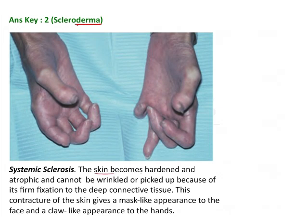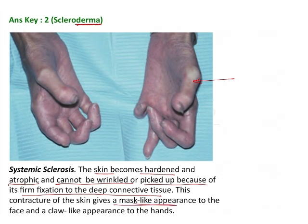In scleroderma, the skin becomes hardened and atrophic, and cannot be wrinkled or picked up because of firm fixation to the deep connective tissue. The skin is very stiff and rubbery. This contracture of the skin gives a mask-like appearance to the face and a claw-like appearance to the hands. So these claw-like hands are typical of scleroderma.